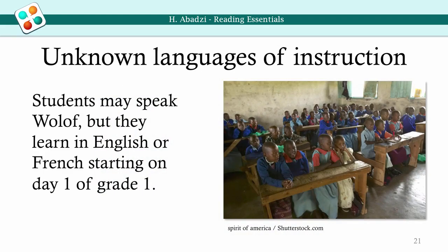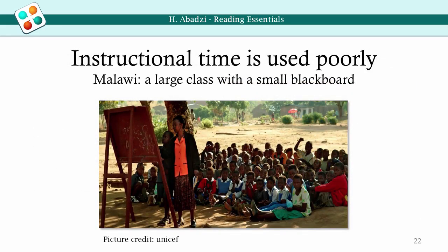Many countries are multilingual and may use certain European languages for instruction, notably English, French, or Portuguese. The first two, in particular, have complex spelling systems. Students enter school without knowing these languages, and they must learn a language and a complex reading system at the same time. To overcome the barriers of poverty, poor children require more hours of quality instruction, but may get fewer. Without textbooks, many spend their day copying incomprehensible texts. In this picture, for example, very few students can see what is on the blackboard, so they get little real instruction or practice.